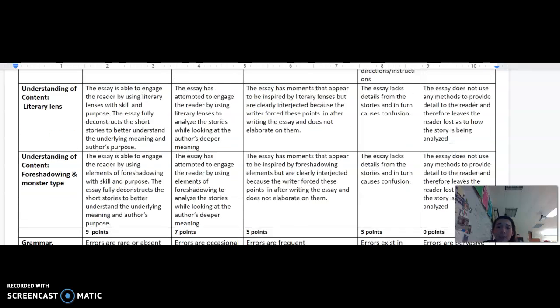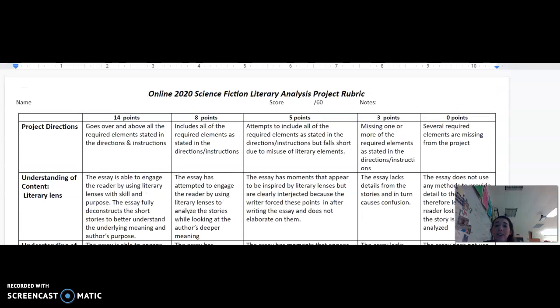Alright, and that is our rubric for the literary analysis choice for the project. It is worth 60 points and its due date is December 7th. Alright guys, I hope you guys are all staying happy and healthy and I will talk to you later. Bye.